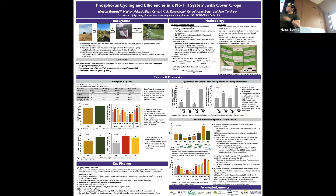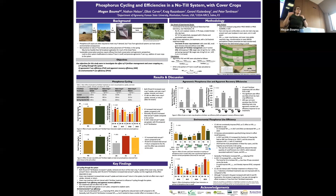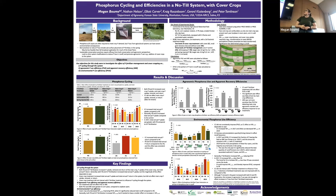Looking at phosphorus cycling results: the cover crop did not affect main crop phosphorus access or utilization, which is a good thing agronomically — it wasn't interfering with the main crop's ability to access and utilize phosphorus. Generally speaking, anytime we added phosphorus — whether fall broadcast or spring injected — we saw an increase in phosphorus moving through the cover crop and main crop compared to the control. For agronomic phosphorus use efficiency, we didn't see any effect of cover crop or fertilizer treatment, but we did see a significant main effect of year, with our two corn years having much greater phosphorus use efficiency than our two soybean years.